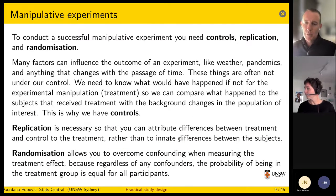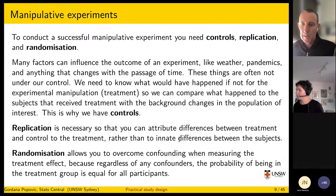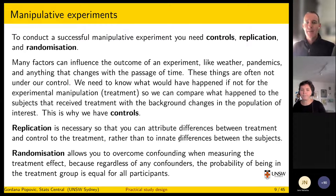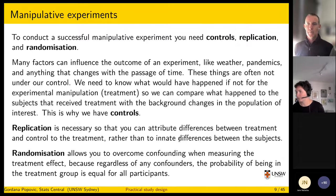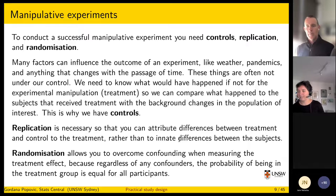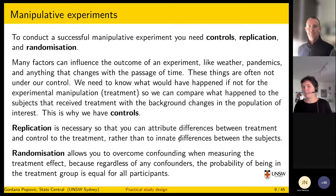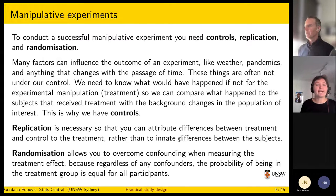Question from the audience: what's your take on multivariable regression versus propensity scores for handling confounders? They do similar jobs. I tend to prefer multivariable regression because it's more flexible — you can control for linear and non-linear relationships, and each variable is controlled for independently. But there's nothing wrong with other methods of controlling for confounding; it depends a bit on the question.